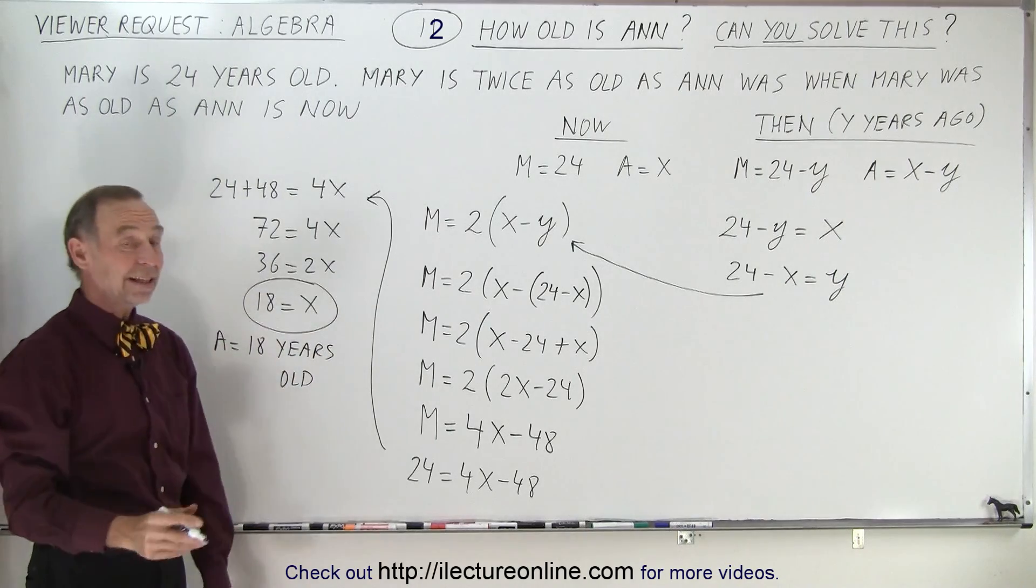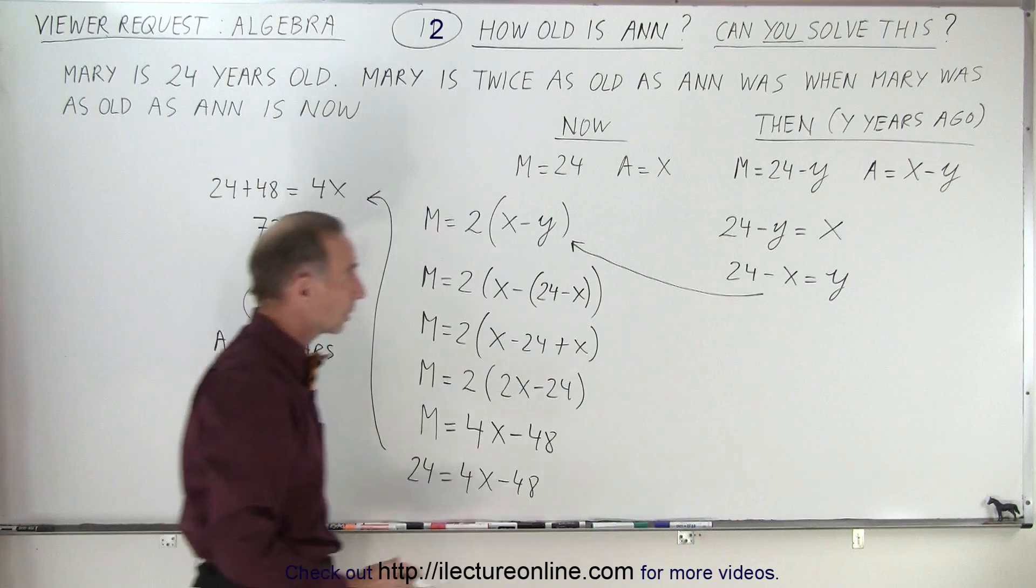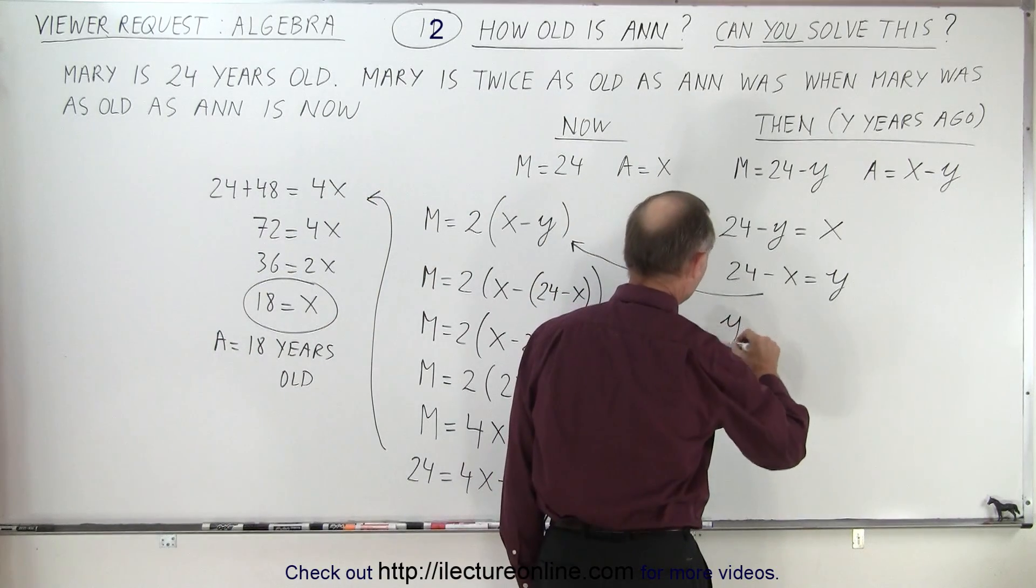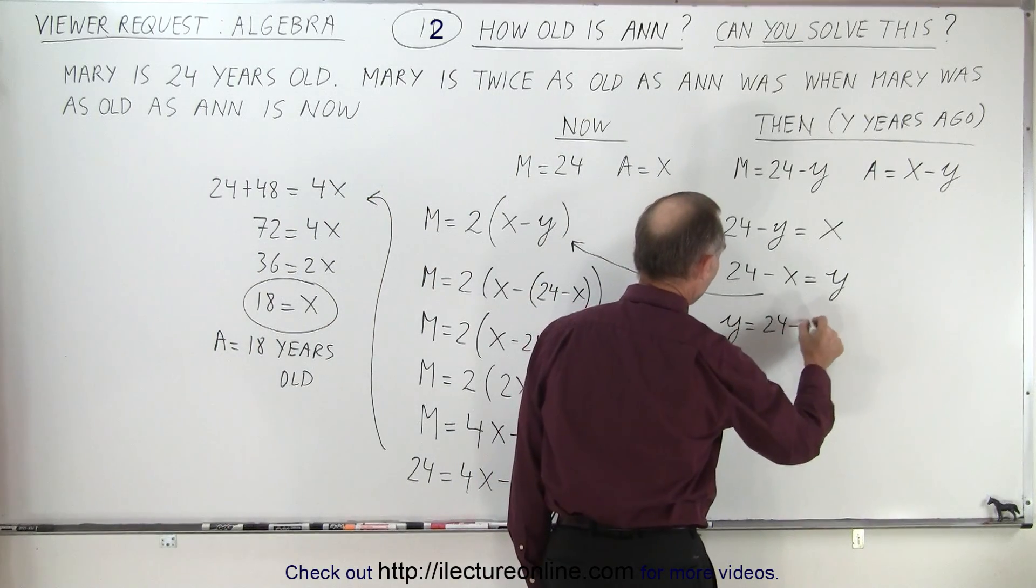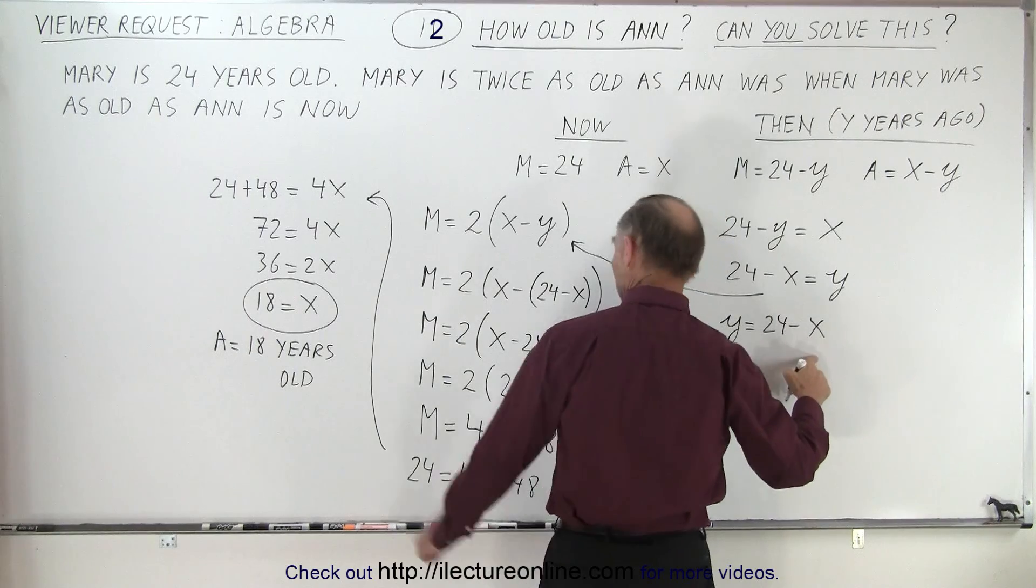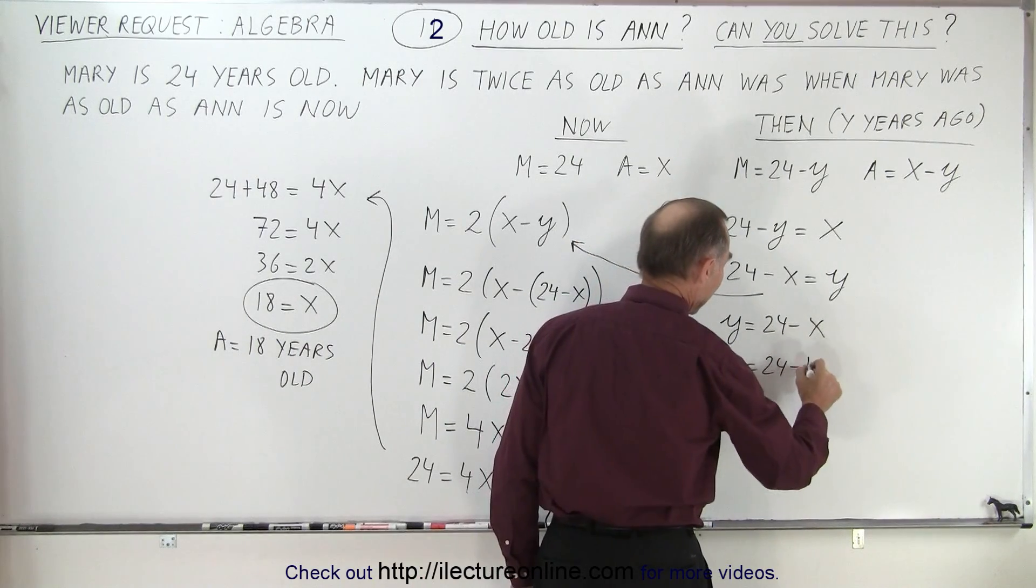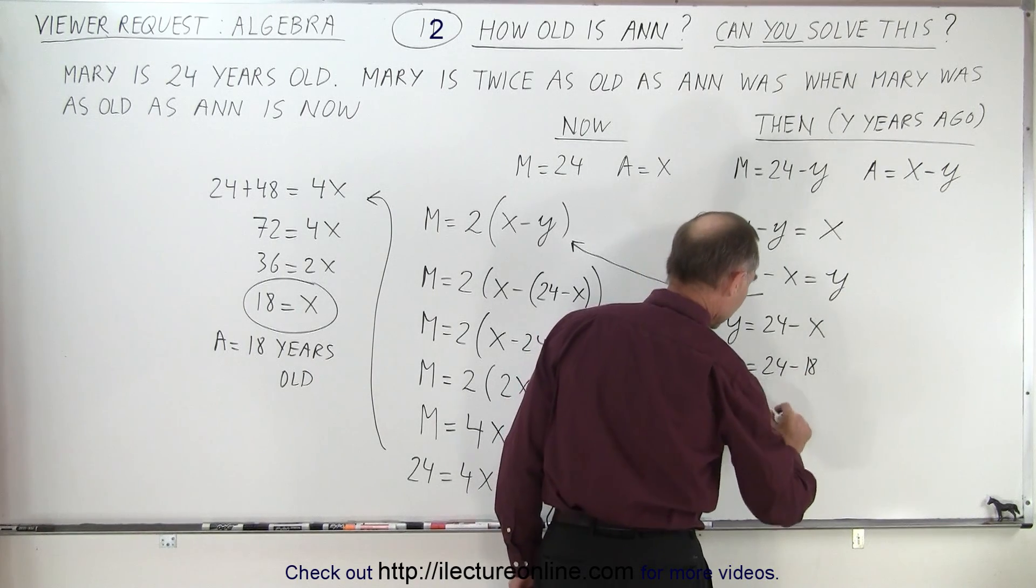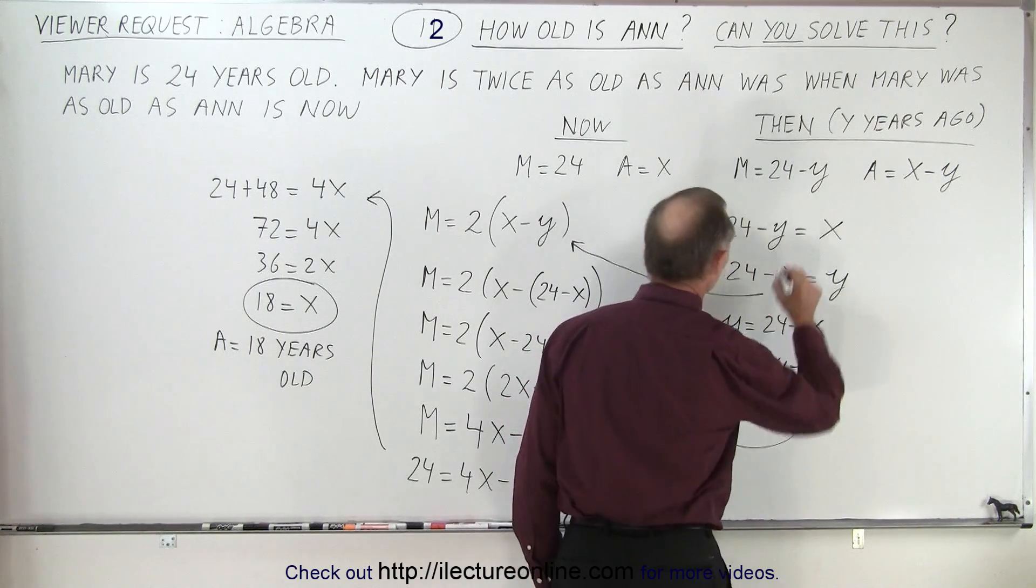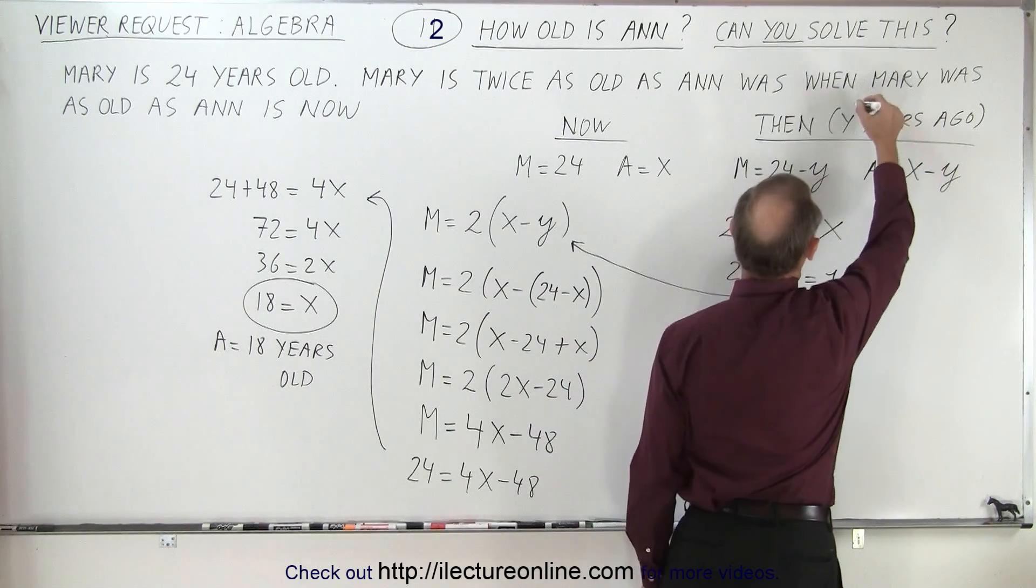So if Anne is 18 years old then how long ago are we talking about? Well we can come back over here. We can say that Y is equal to 24 minus X, and so we now know that X is 18, so Y is equal to 24 minus 18, so Y is equal to 6. So 6 years ago.